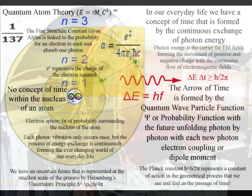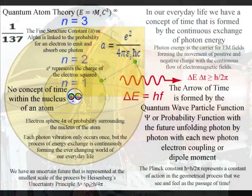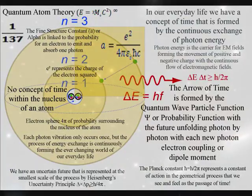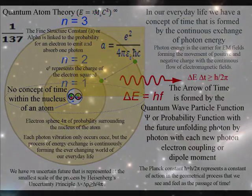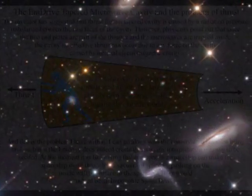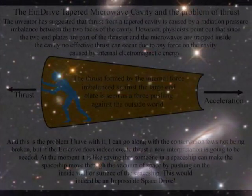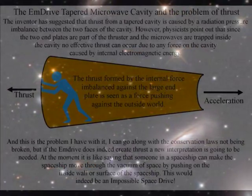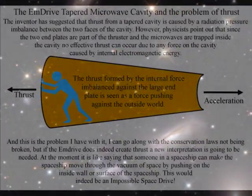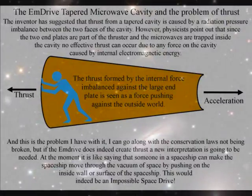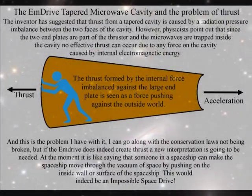If you say that these photons are unimportant and that they have no effect on space and time, then it is like saying that someone in a spaceship can make the spaceship move through the vacuum of space by pushing on the inside wall or surface of the spaceship. This would indeed be an impossible space drive.